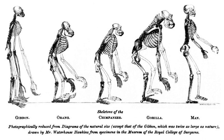In contrast, sexual selection is a product of mate choice and can favour the spread of genetic variants which act counter to natural selection but increase desirability to the opposite sex or increase mating success. Artificial selection, also known as selective breeding, is imposed by an outside entity, typically humans, in order to increase the frequency of desired traits.